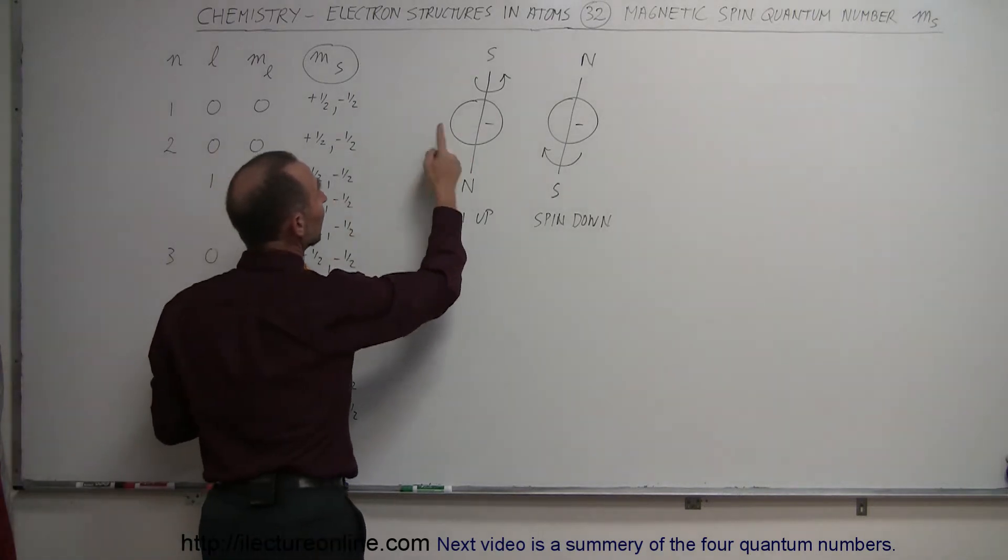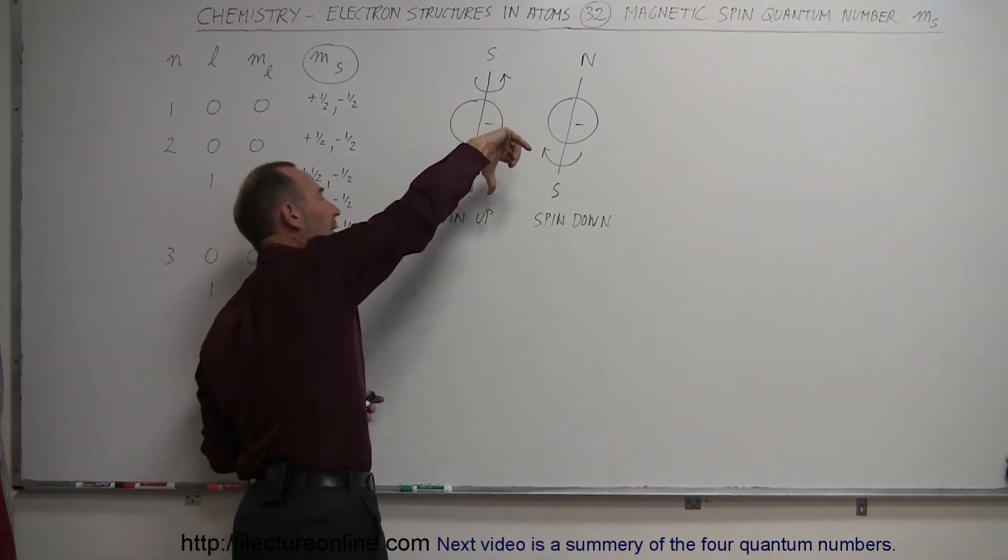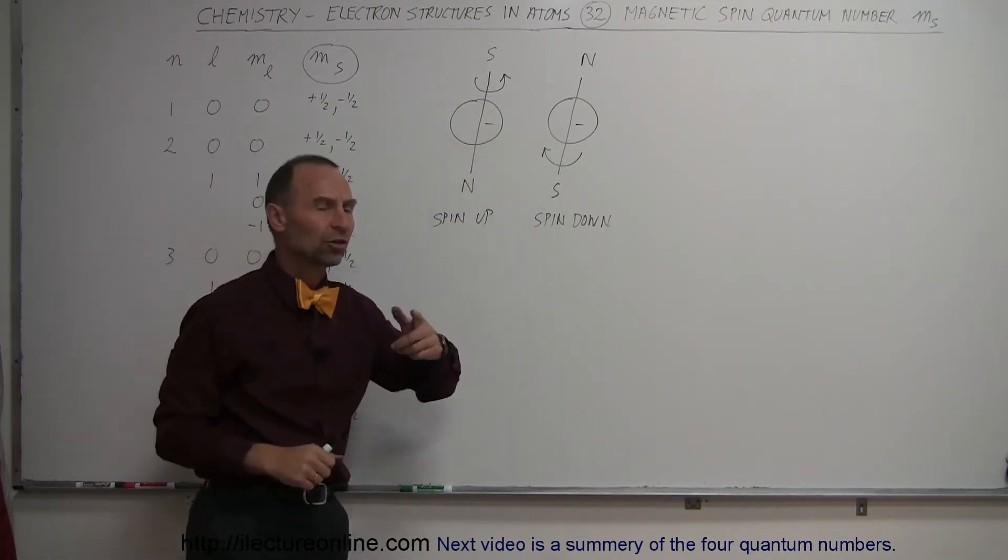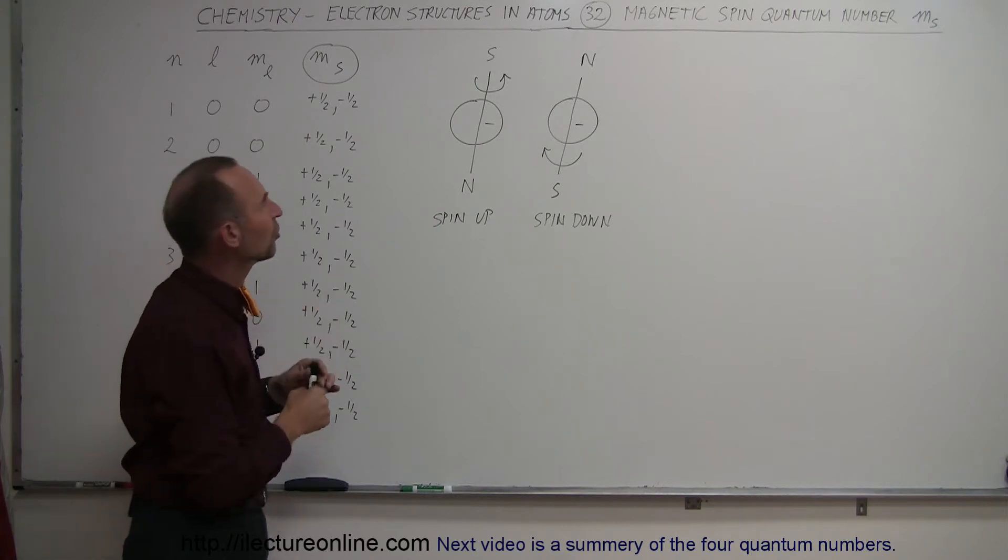So an electron can either spin like this—that's called spin up—or it can look like this, and then it's called spin down. Notice, since the electrons are negatively charged and these particles are rotating around, some sort of current situation appears,